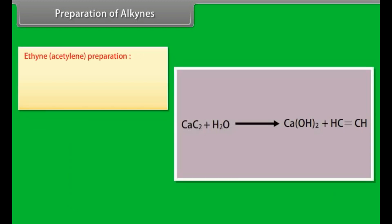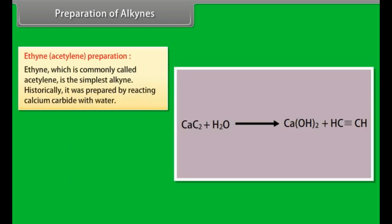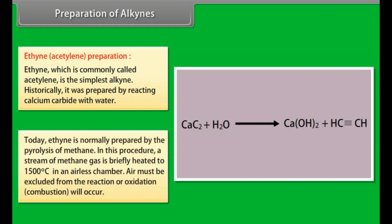Ethyne, acetylene preparation. Ethyne, which is commonly called acetylene, is the simplest alkyne. Historically, it was prepared by reacting calcium carbide with water. Today, ethyne is normally prepared by the pyrolysis of methane. In this procedure, a stream of methane gas is briefly heated to 1500 degrees centigrade in an airless chamber. Air must be excluded from the reaction or oxidation combustion will occur.